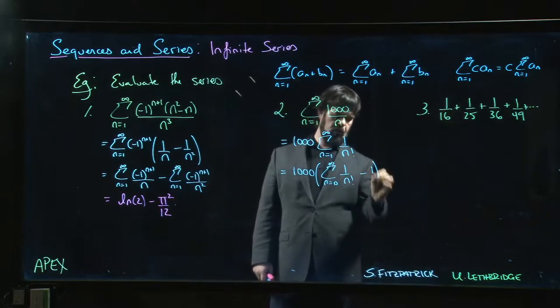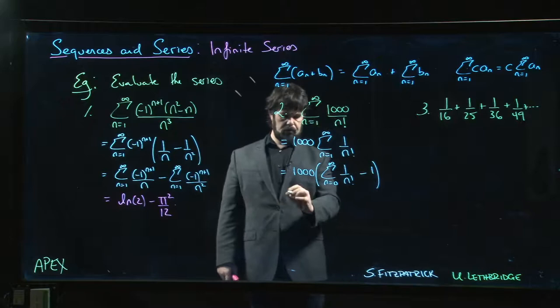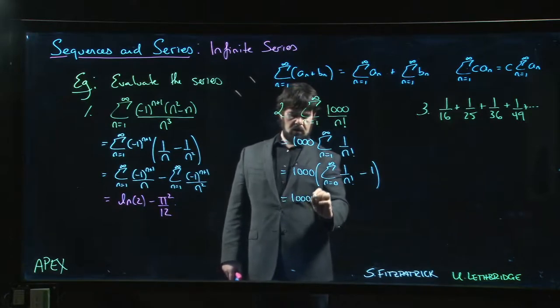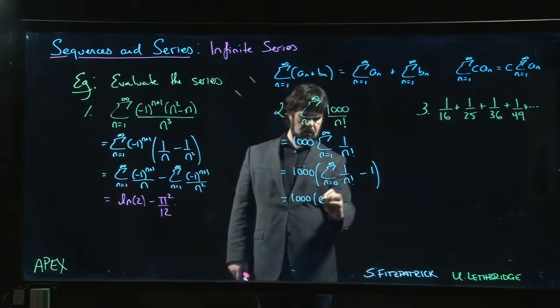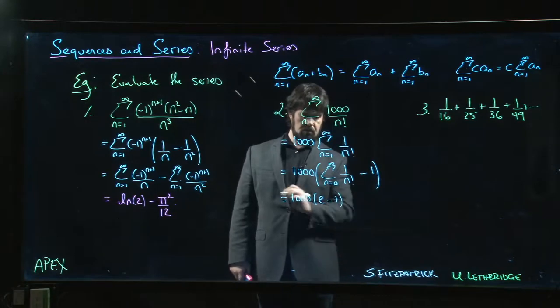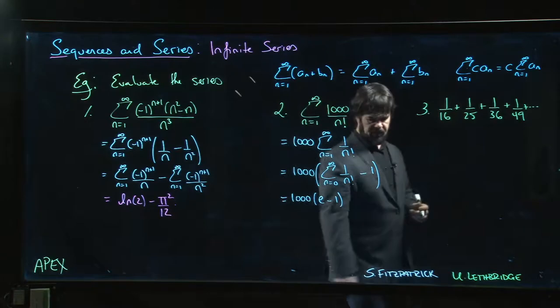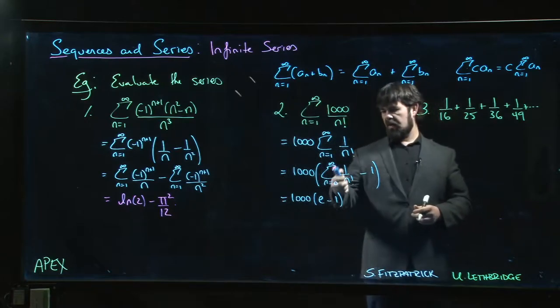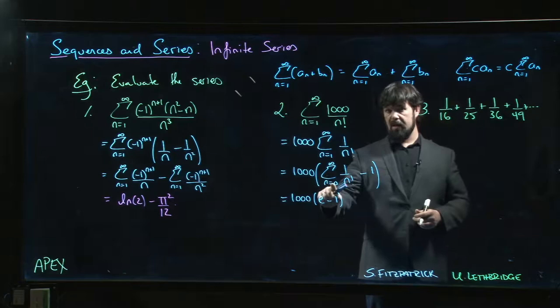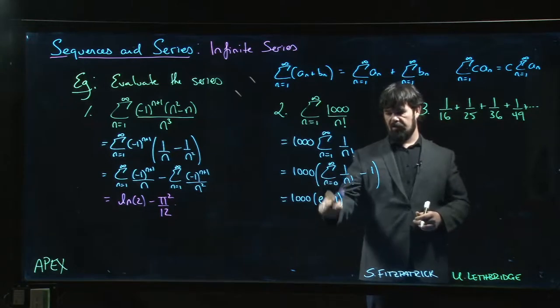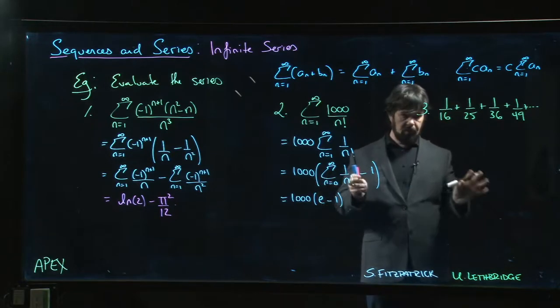And then I know that this is e, and that's 1000(e - 1). We will actually see later on why this is equal to e. Once we've done power series and Taylor series we'll see why that's equal to e, but we're not there yet.